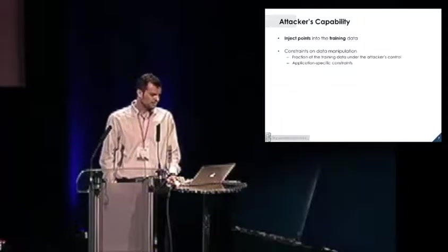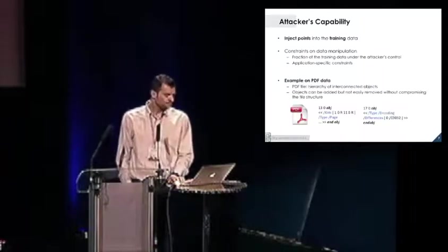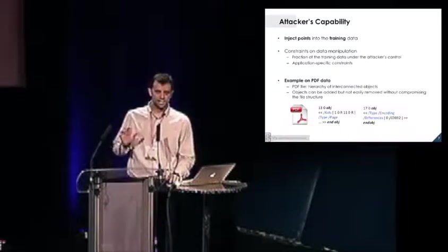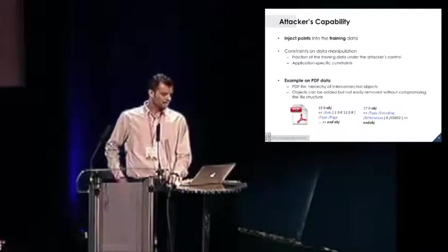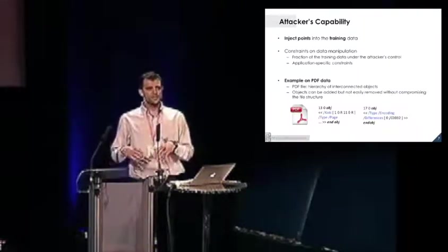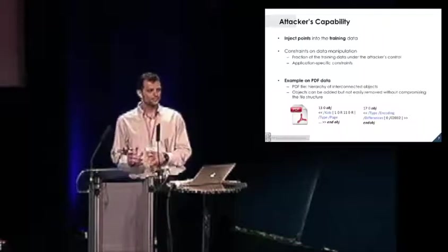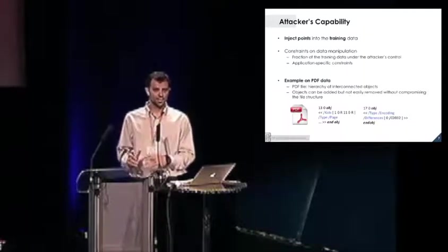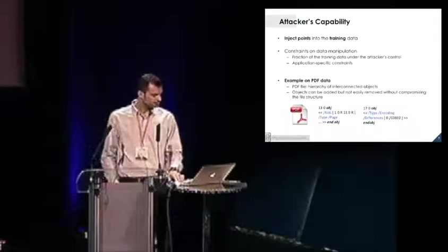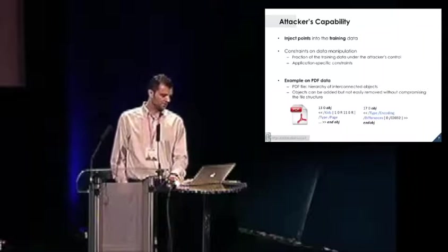There are also application-specific constraints that have to be fulfilled when manipulating this data to achieve the attacker's goal. For example, in the case of PDF data, we can think of a PDF file as a hierarchy of interconnected objects. While it is easy to add new objects to the file, it's very difficult to remove things from there without compromising the file structure. If you want the PDF file to keep working, you have to just insert objects. So this is an example of an application-specific constraint.